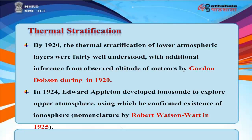By 1920, the thermal stratification of lower atmospheric layers was fairly well understood, with additional inference from observed altitude of meteors by Gordon Dobson during 1920. In 1924, Edward Appleton developed ionosound to explore the upper atmosphere, using which he confirmed the existence of the ionosphere, with nomenclature by Robert Watson Watt in 1925.